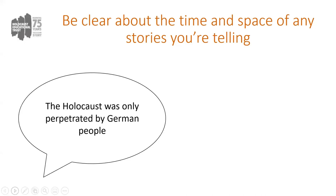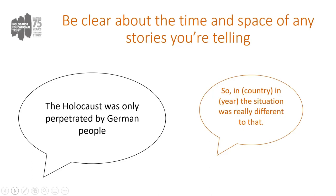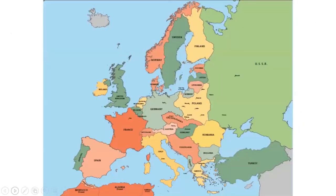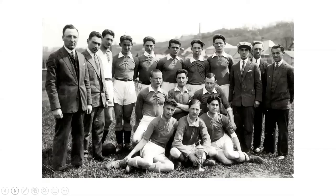The final suggestion is about being clear about the time and space of any stories that you're telling. That's important because the events of the Holocaust happened in many different ways in many different places — there was no typical experience. So if we look at the misconception that the Holocaust was only perpetrated by German people, this reduces the Holocaust geographically and geopolitically. If we start to look at different stories we can examine why that's not the case — by placing each story in a country and in a year. In my case, Lithuania in 1941. Lithuania is on the border with Poland, just slightly north, at the time part of Polish territory and just to the west of the USSR.